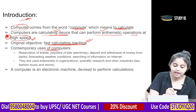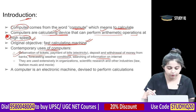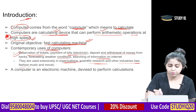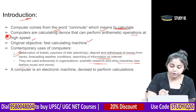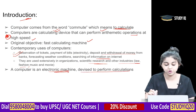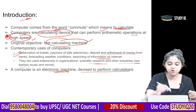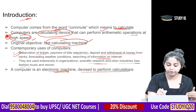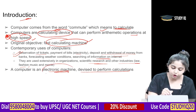Contemporary uses of computers include reservation of tickets, payment of electricity bills, depositing and withdrawal of money from banks, forecasting weather conditions, and searching information on the internet. They are used extensively in organizations, scientific research, and other industries like law, fashion, music, and movies.